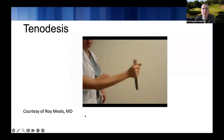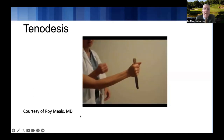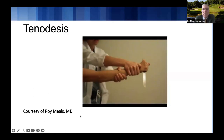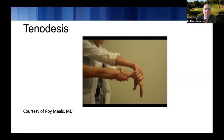Here's another example: you can see someone with a forceful grip. When we forcefully grip, we generally bring the wrist into extension. As the wrist goes into flexion, we lose grip strength and the fingers come into extension. That's how tenodesis augments excursion. With wrist flexion, the fingers extend; with wrist extension, the fingers flex — an important principle when thinking about tendon transfers.